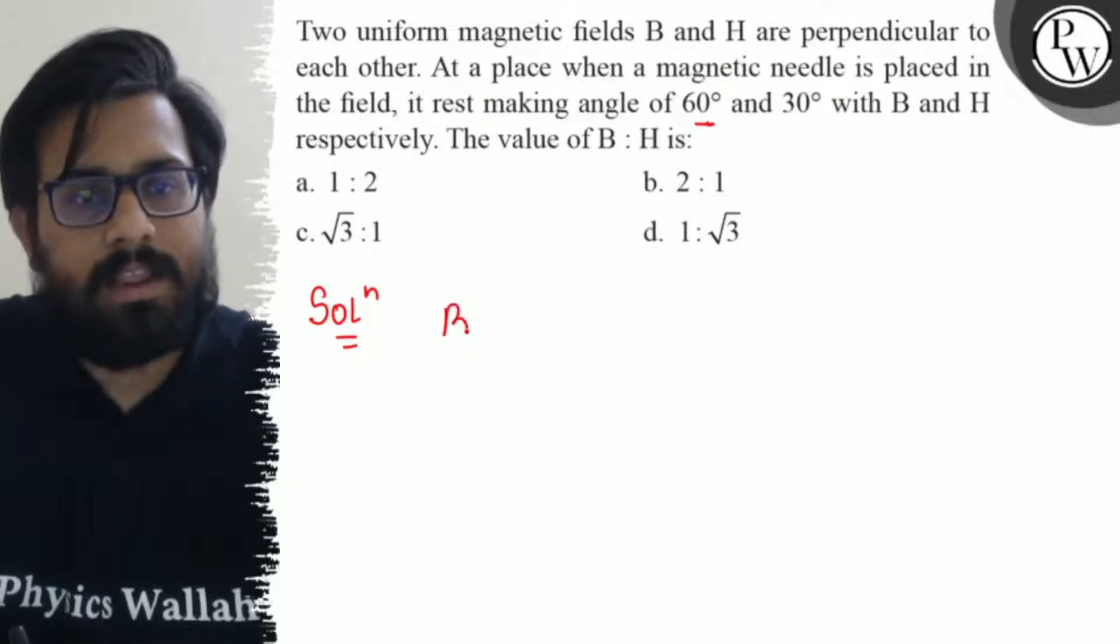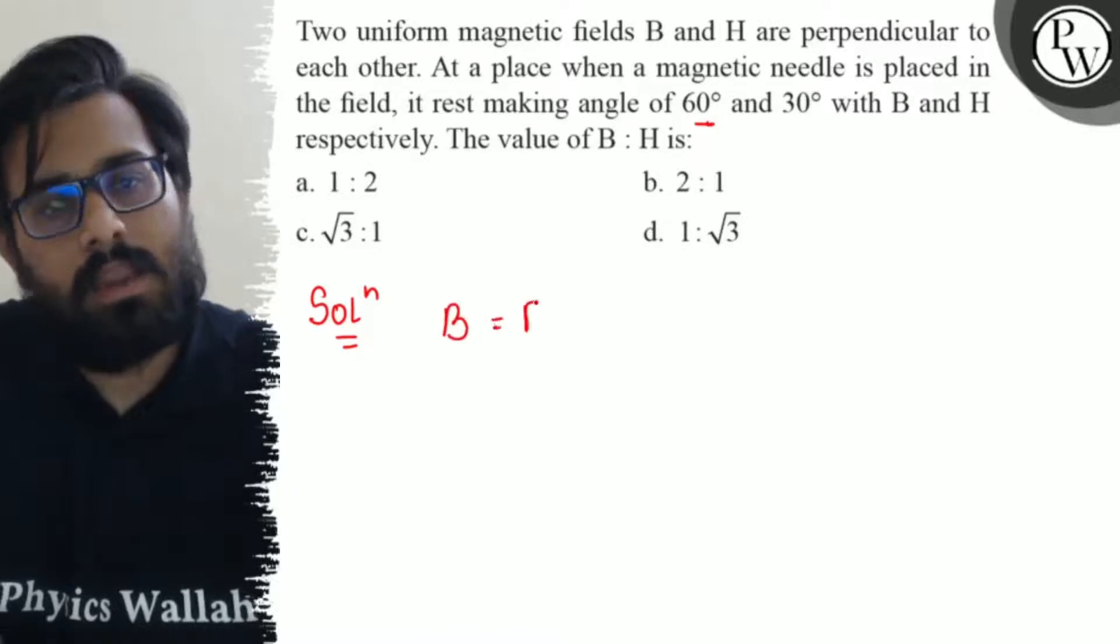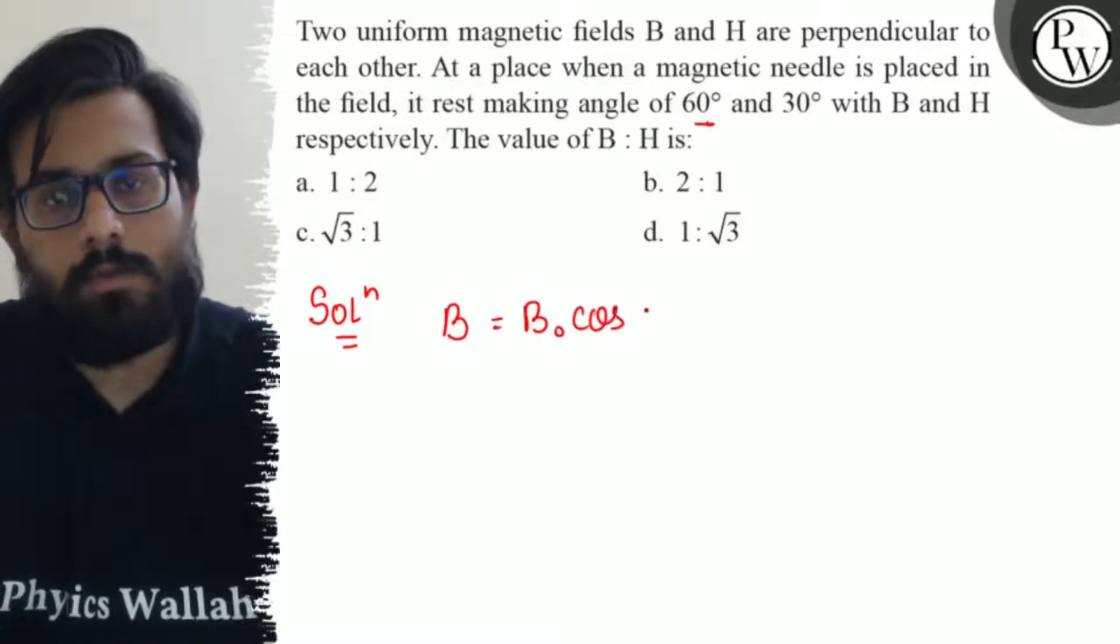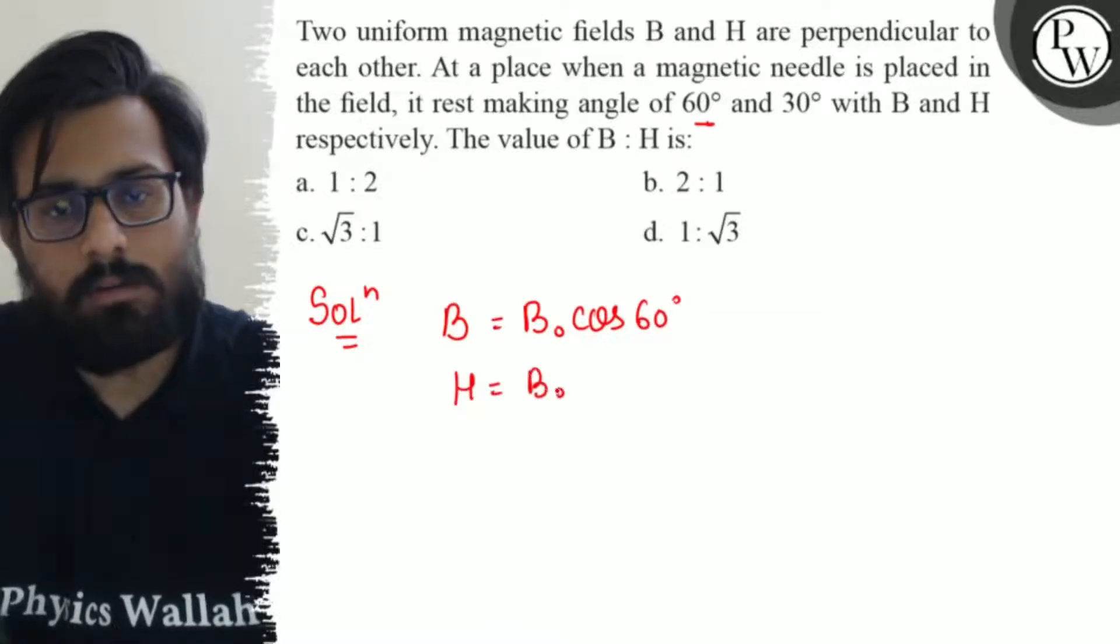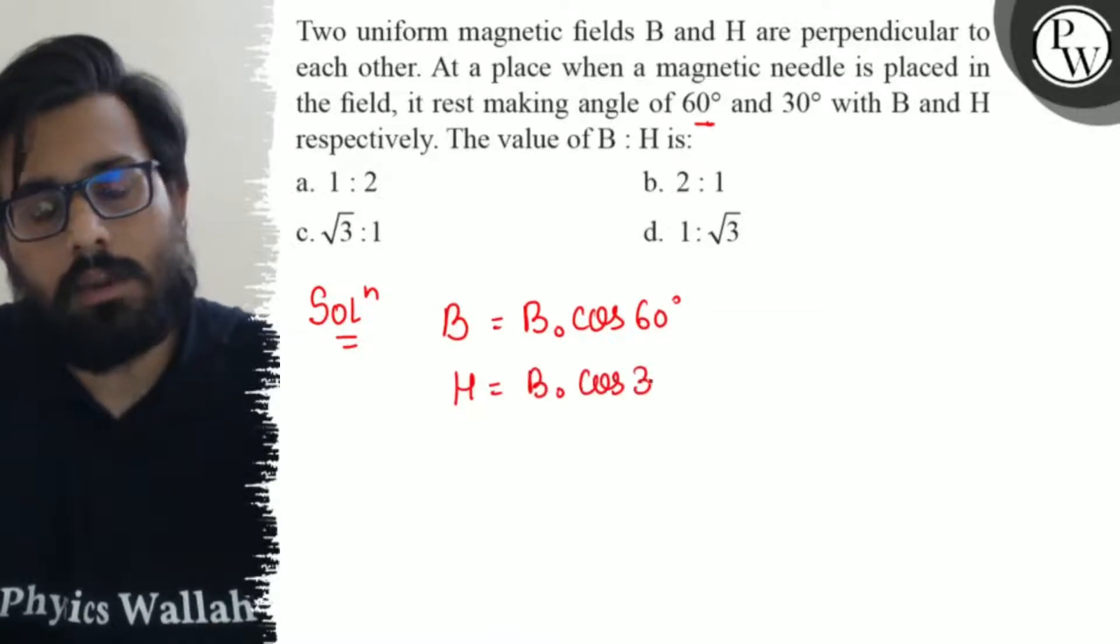For the B, it can be written as B = B₀ cos 60°. For H, again this can be written as H = B₀ cos 30°.